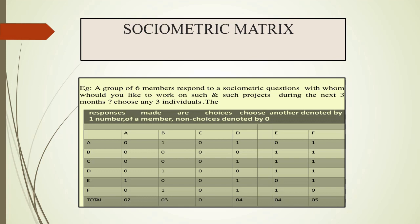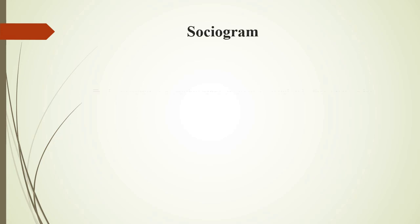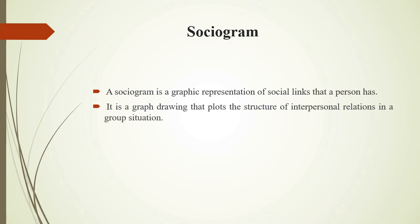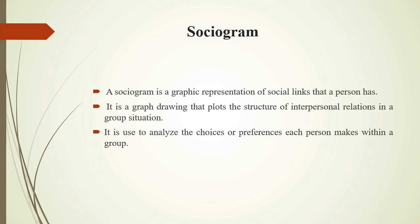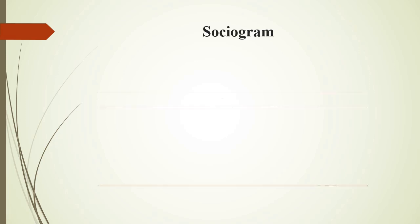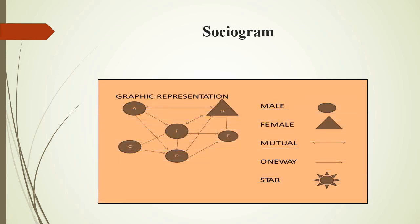This is the example of sociometric techniques and social links — observe it carefully. Next method: Sociogram. A sociogram is a graphic representation of social links that a person has. It is a graph drawing that plots the structure of interpersonal relations in a group situation. It is used to analyze the choices or preferences each person makes within a group. Here is an example picture of a sociogram as a graphic representation.